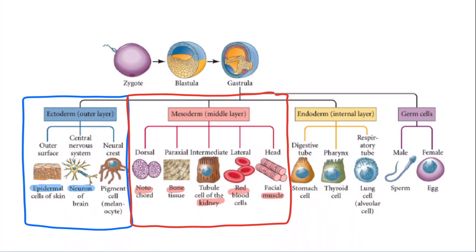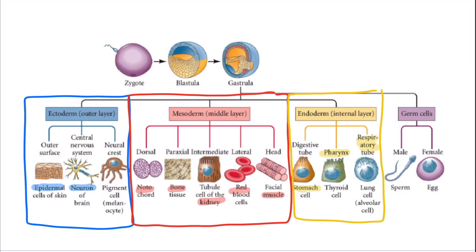The third layer is the endoderm, represented by yellow. This is the innermost germ layer that forms the epithelial lining of the respiratory tract, gastrointestinal tract, and the accessory organs of the digestive system like the liver and pancreas.